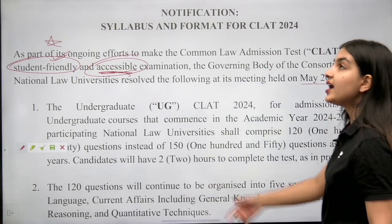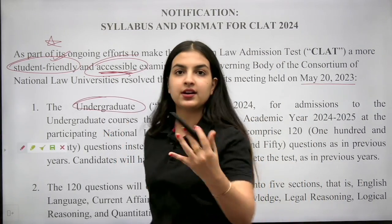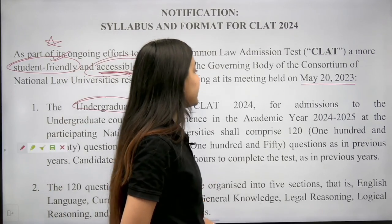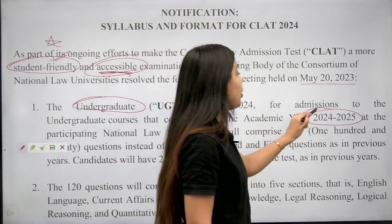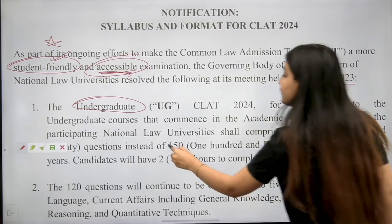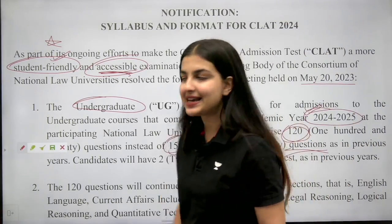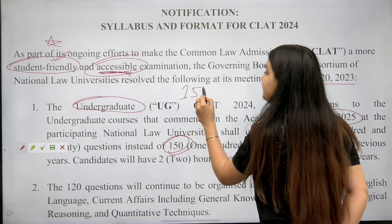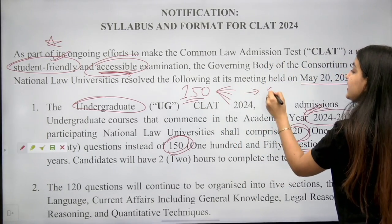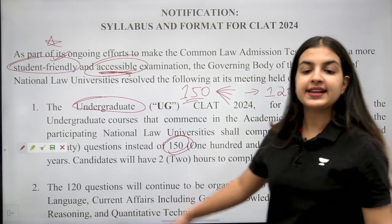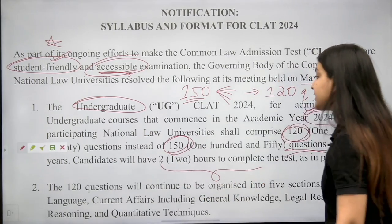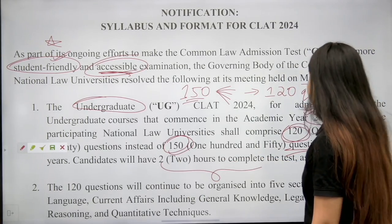So first of all, for the undergraduate CLAT — for admissions to undergraduate courses commencing in the academic year 2024 to 2025 — participating NLUs shall comprise 120 questions instead of 150. So the number of questions has been reduced. Previously the paper had 150 questions divided into 5 sections. Now it will be 120 questions in total. The time will remain the same: candidates will have two hours to complete the test, as in previous years.